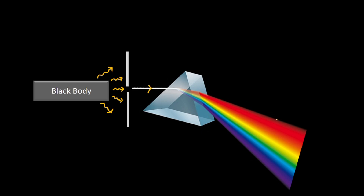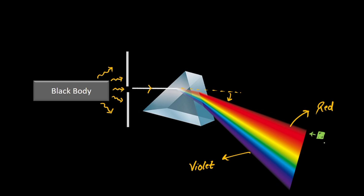The white light splits into multiple colors in such a way that the color with the maximum wavelength — in this case, red — has the maximum wavelength and would deviate the least, while the color with the least wavelength — violet — would deviate the most. The colors that are deviated would not be of the same intensity. So, in order to measure the intensity, we have a detector that can detect the intensity of this incoming radiation, and once we know the intensity, we can also find out the energy of the incoming radiation.